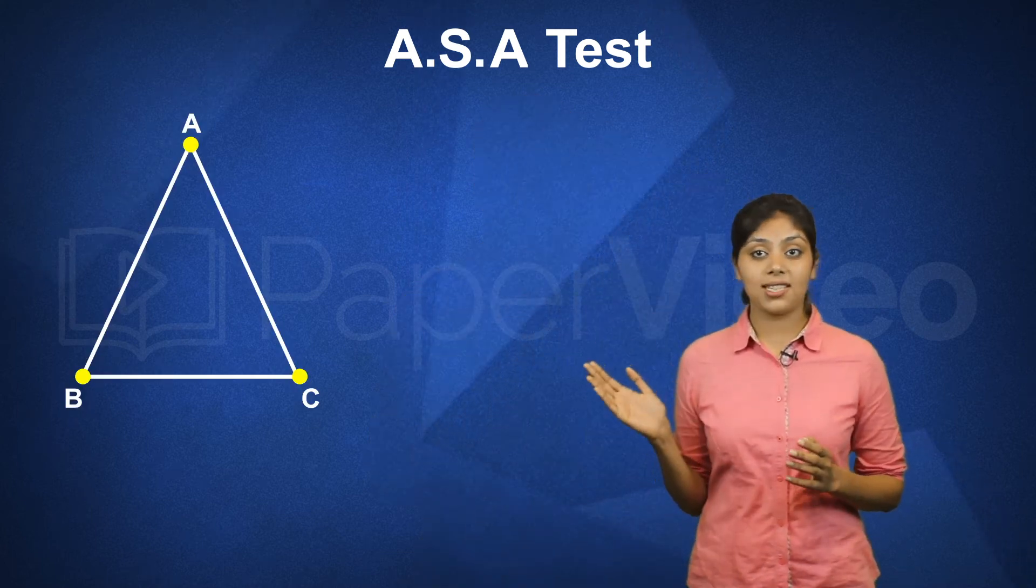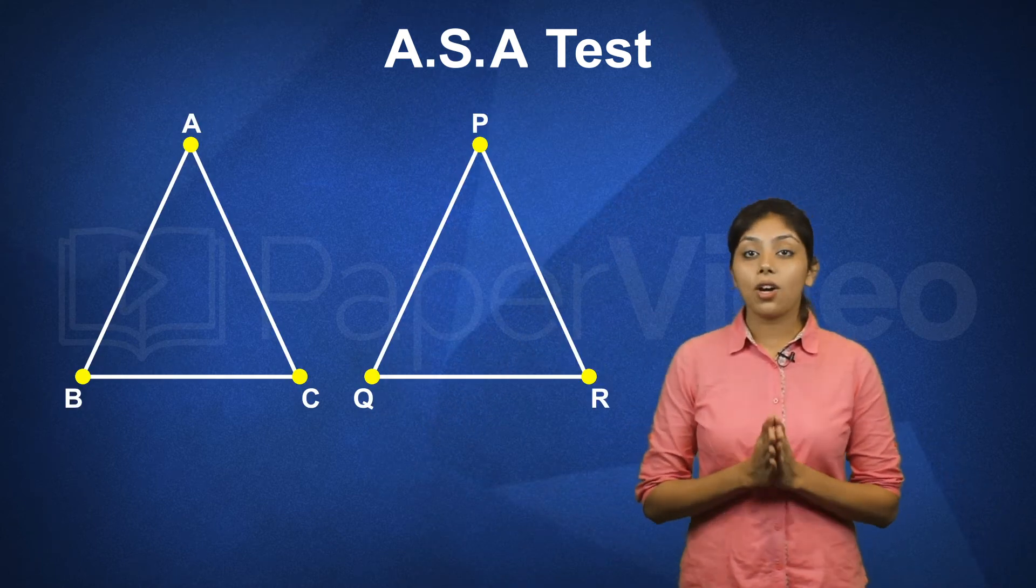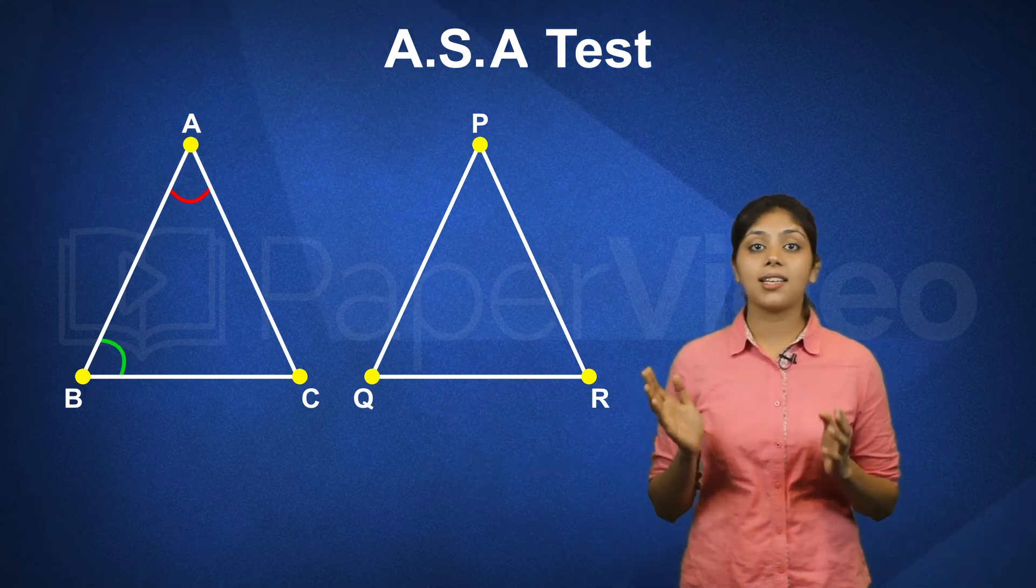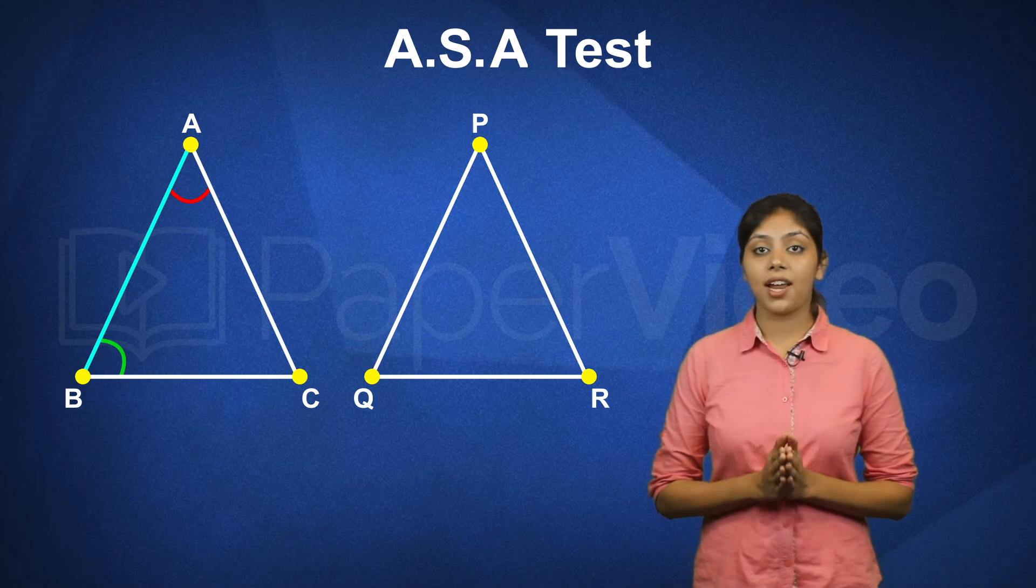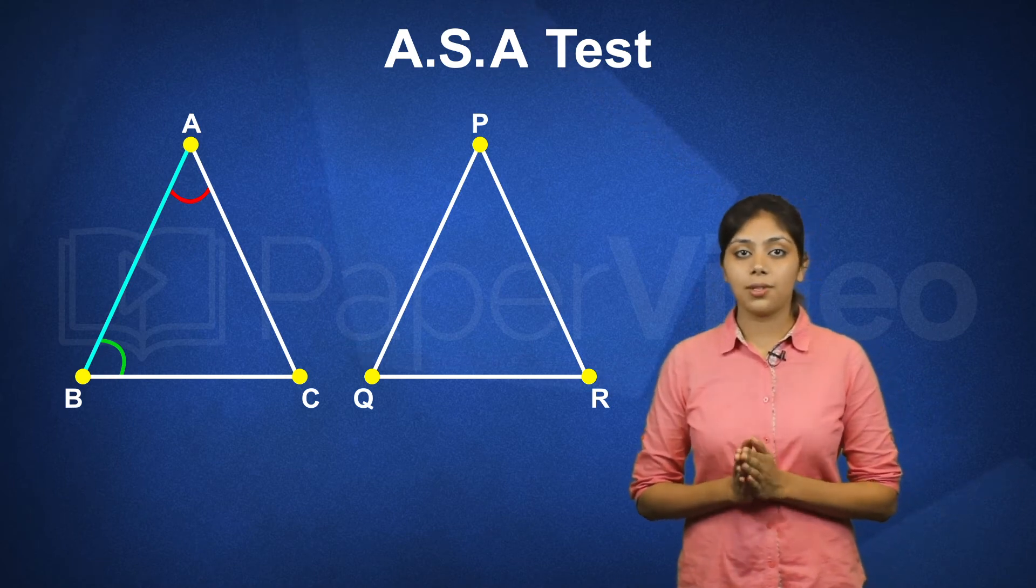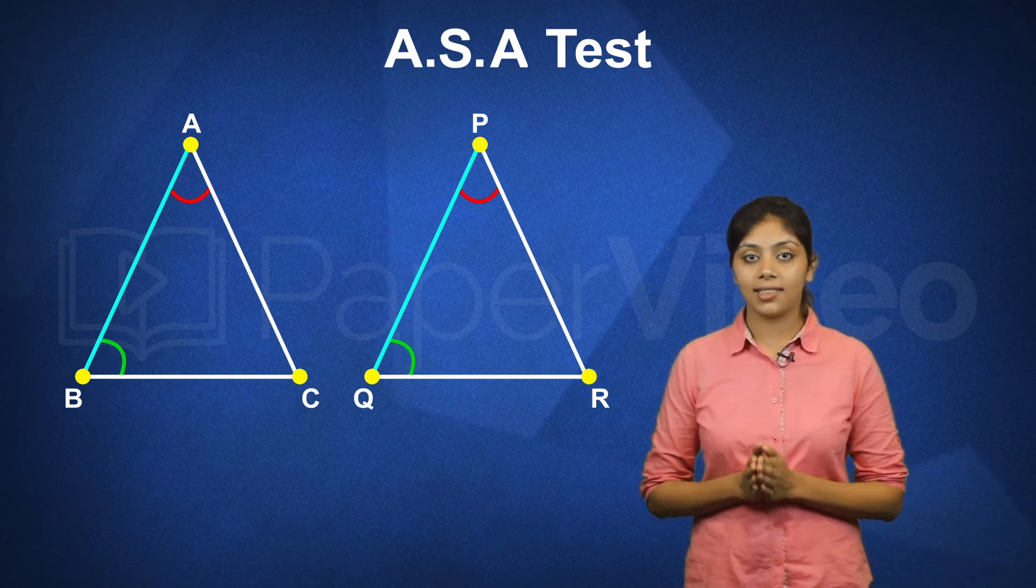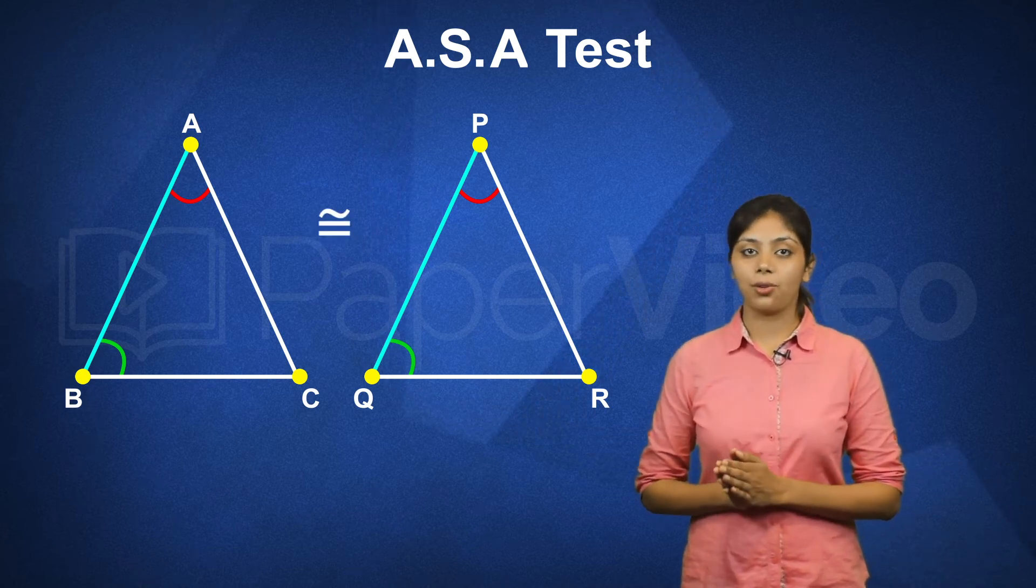To understand this, let us consider two triangles ABC and PQR. According to Angle-Side-Angle Test, if any two angles and an included side of triangle ABC are equal to the corresponding angles and an included side of triangle PQR, then the triangles are congruent.